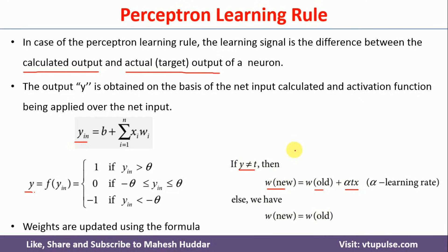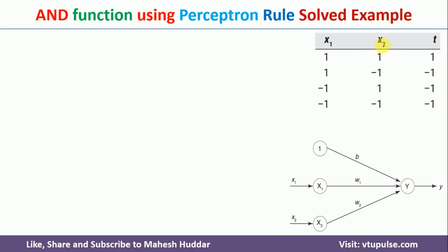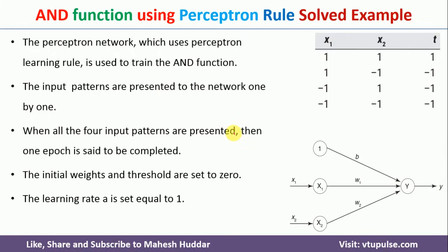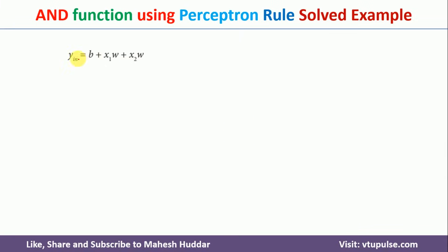Now we will understand how the AND function is designed using the perceptron rule. The output of the AND function is high only when both inputs x1 and x2 are high; in all other cases, the target is low. The network has two inputs x1 and x2, a bias b, and weights w1 and w2. We initialize these and calculate the output at the output unit. If the calculated output matches the target, no weight update is needed; otherwise, we update.